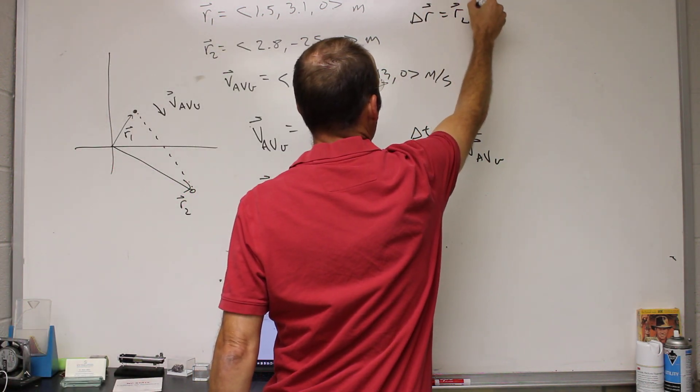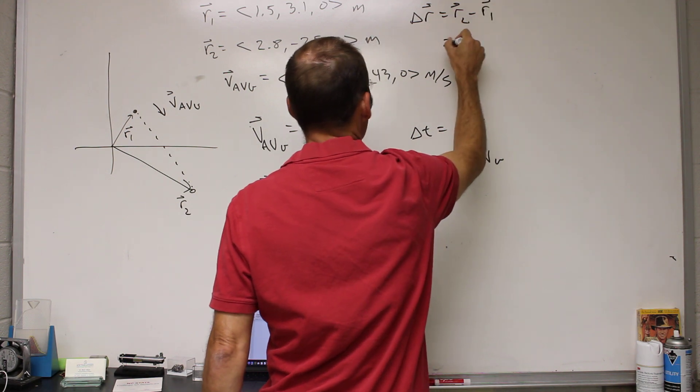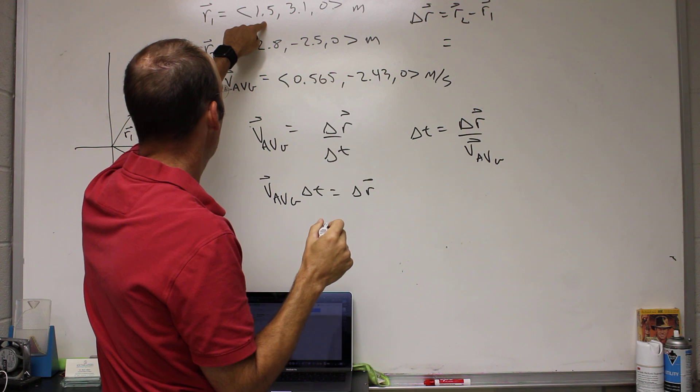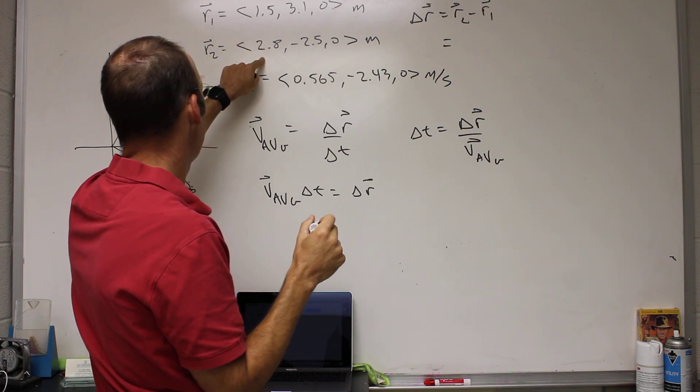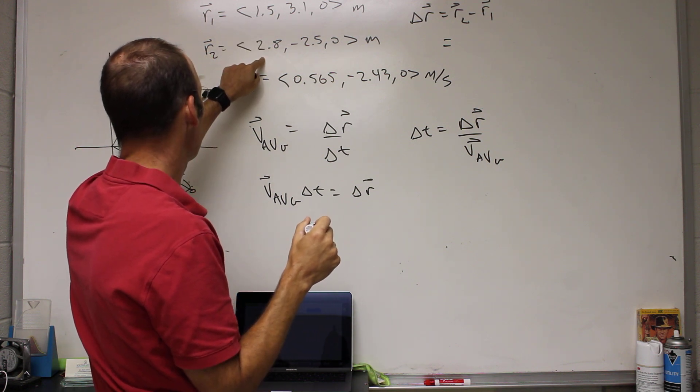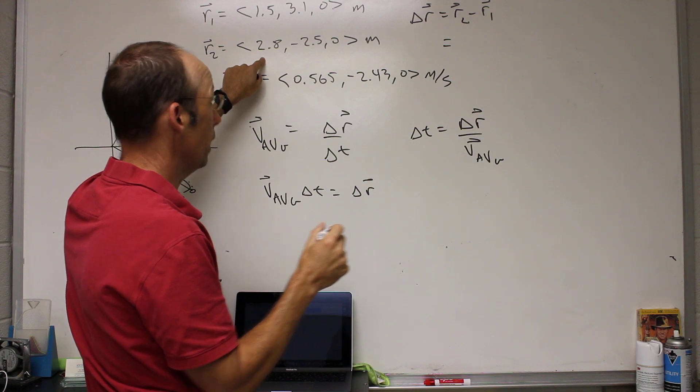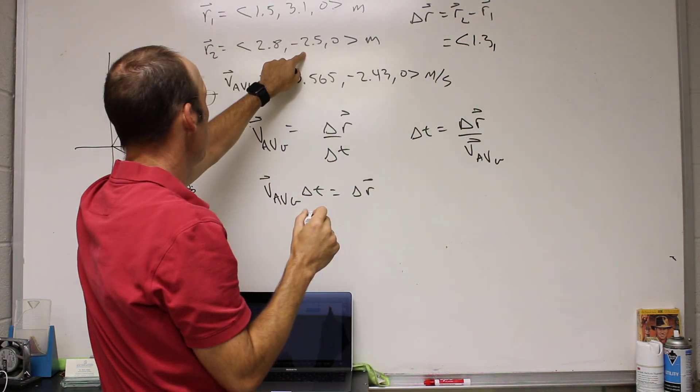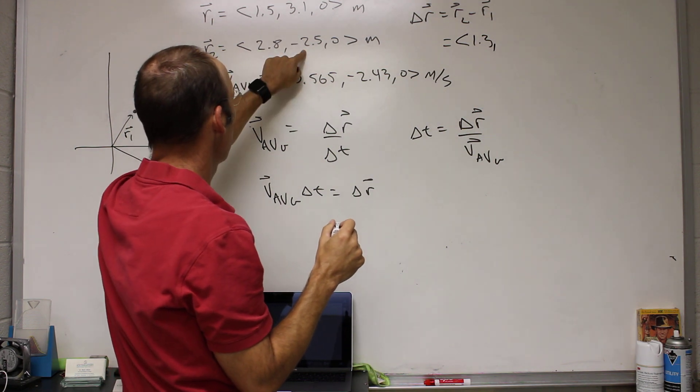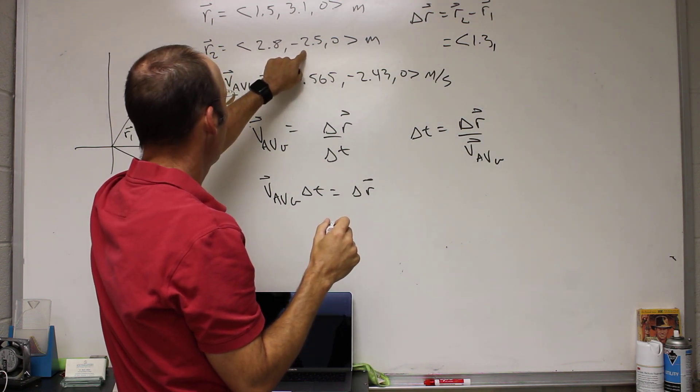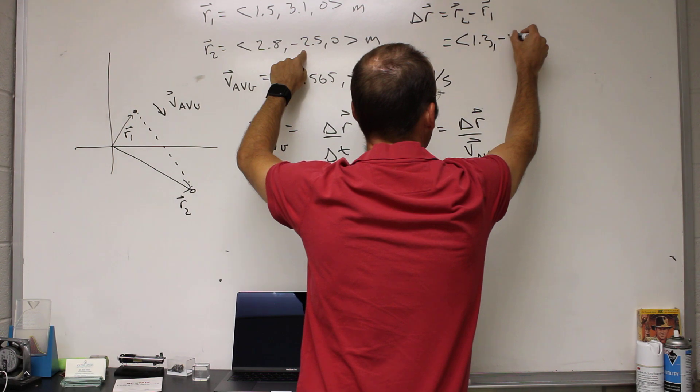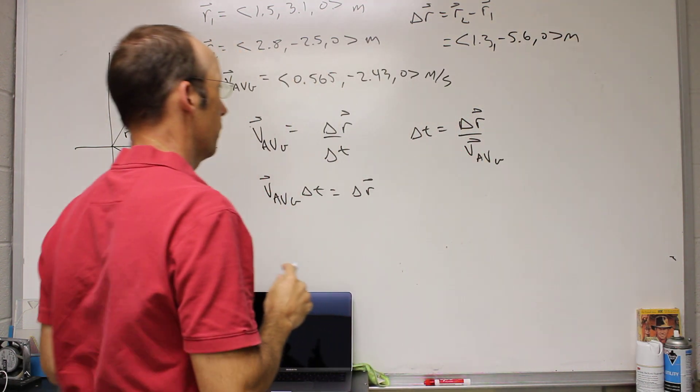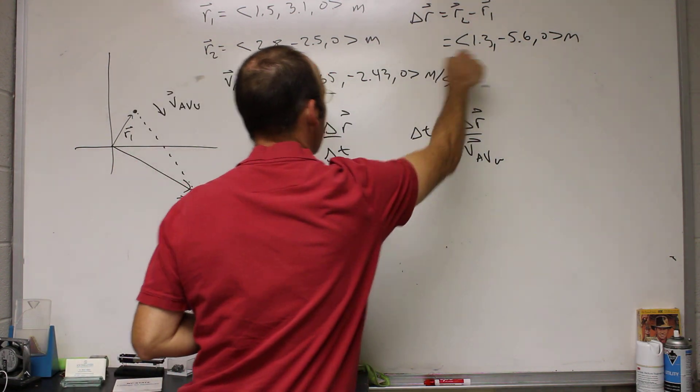It's going to be r2 minus r1. So delta r is going to be r2 minus r1. So 2.8 minus 1.5, so it's going to be 1.3. Negative 2.5 minus 3.1 is going to be negative 5.6. So that's my delta r. So how do I divide this by this? You can't divide vectors.